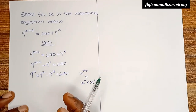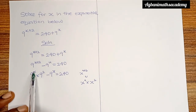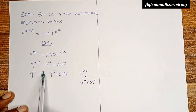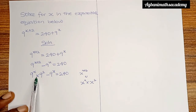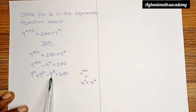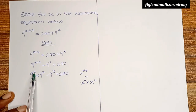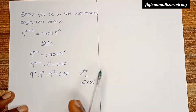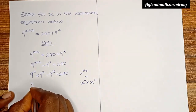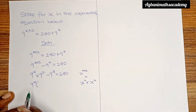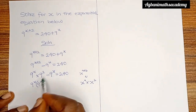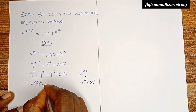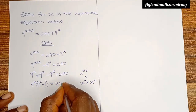Now at this point we can factorize. We have 9 raised to the power x multiplied by 9 raised to the power 2 as one group, and minus 9 raised to the power x as another group. Both groups share 9 raised to the power x, so we bring it outside the bracket. This gives us 9 raised to the power x, bracket open, 9 raised to the power 2 minus 1, bracket close, is equal to 240.